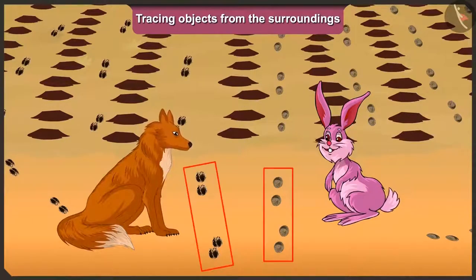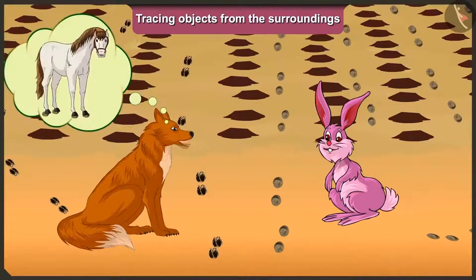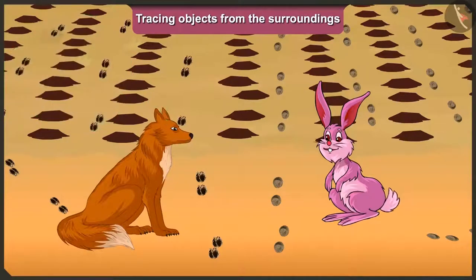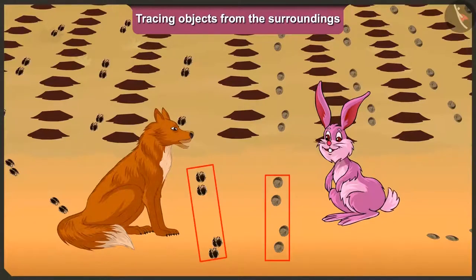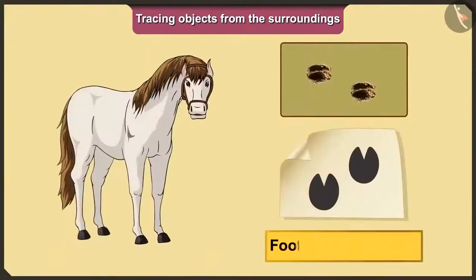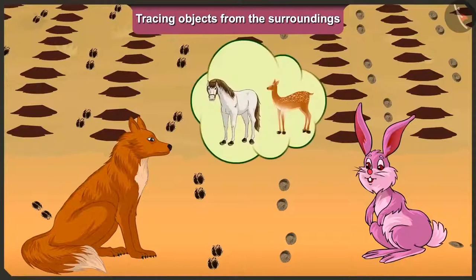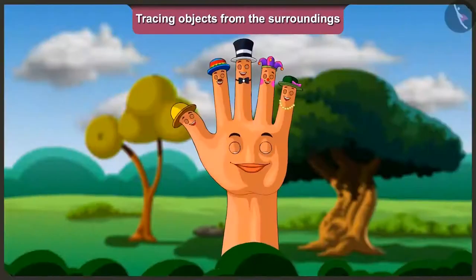When the fox looked carefully at the farm, he found two types of traces of feet. Looking at those two traces, the fox immediately told the rabbit: the deer and the horse came in your farm. But how did you know that? Just look carefully — these traces match the traces of deer's feet, and these traces match the traces of horse's feet. So these two have taken away all the carrots from my farm.